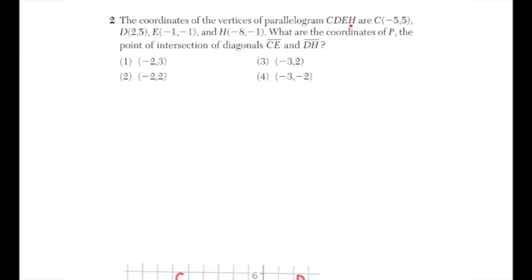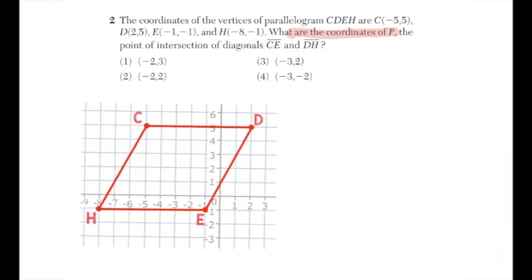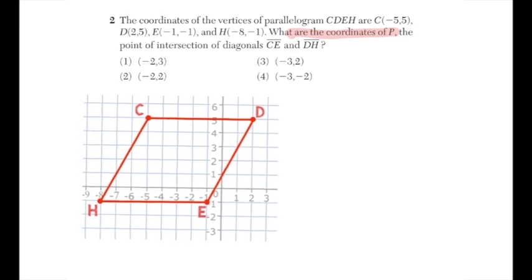Question number two: we have parallelogram CDEH and our objective is to determine the coordinates of P, which is the intersection of diagonals CE and DH. Sketch out the parallelogram and recall that the diagonals of a parallelogram are segment bisectors — they intersect at the midpoint of each diagonal. There are two ways to approach this: visually or algebraically. We'll start visually.